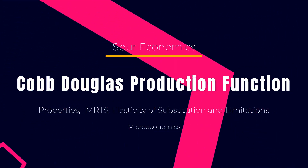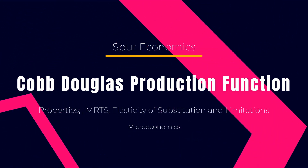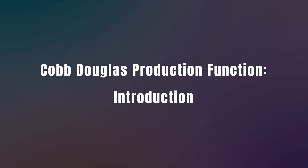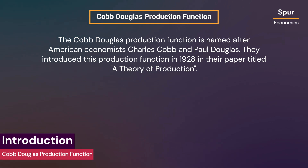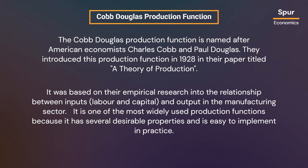Hello and welcome to Spur Economics. In this video we will discuss the Cobb-Douglas production function, its important properties and estimation. The Cobb-Douglas production function is named after American economists Charles Cobb and Paul Douglas. They introduced this production function in 1928 in their paper titled 'A Theory of Production'. It was based on their empirical research into the relationship between inputs — labor and capital — and output in the manufacturing sector.